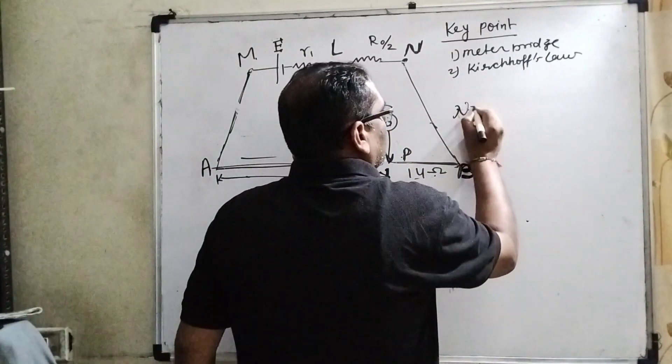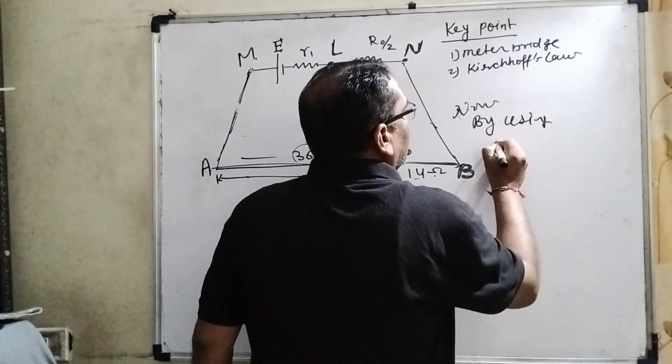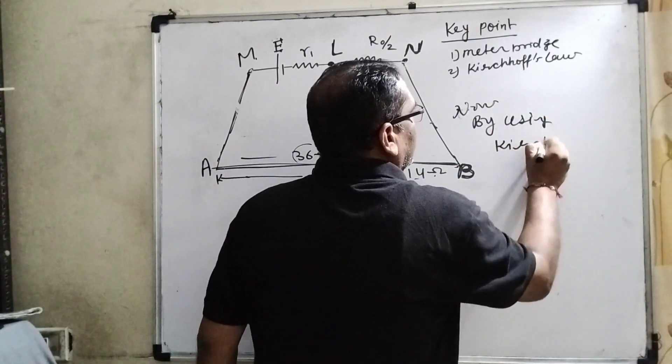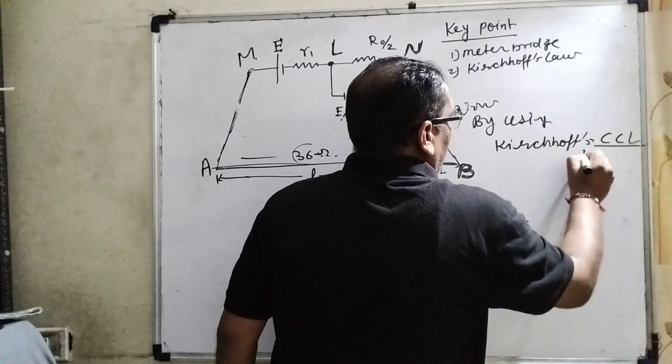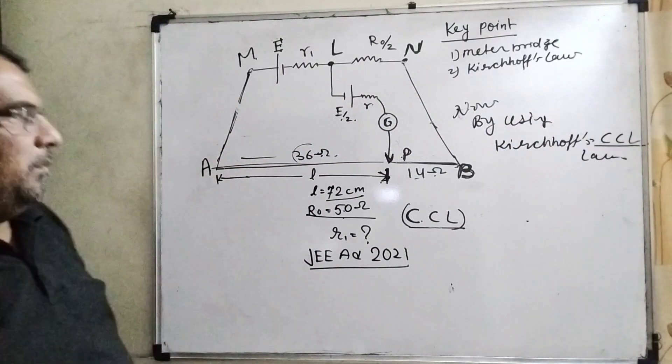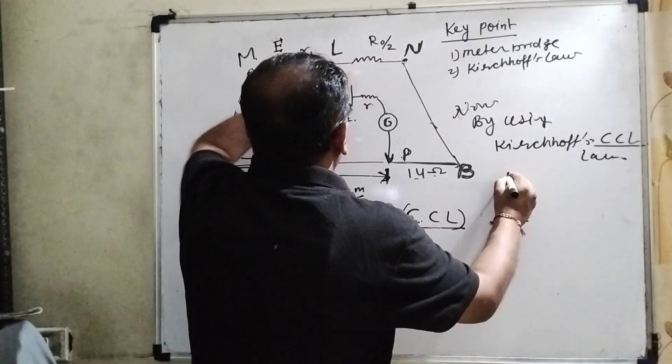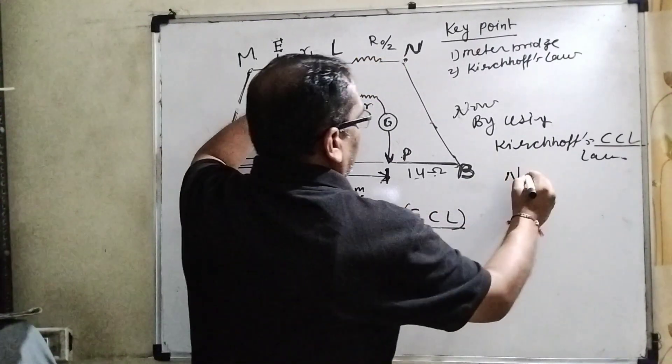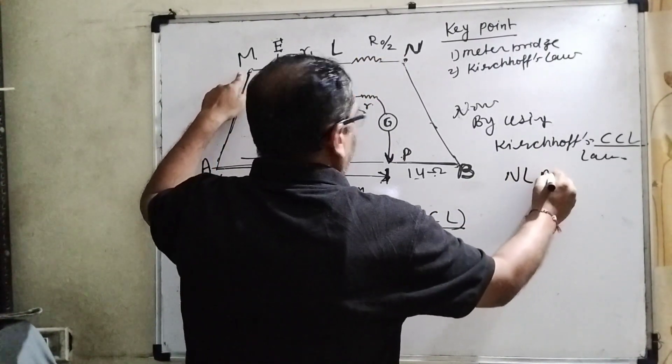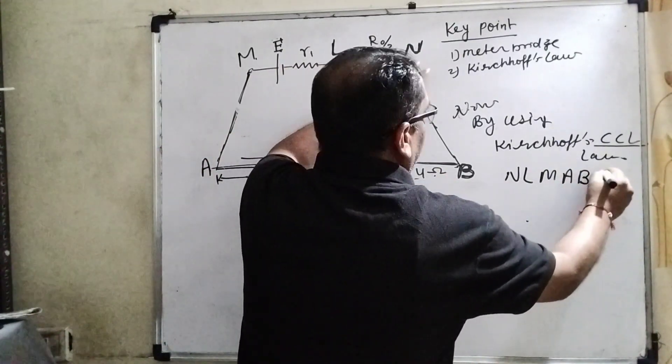By using Kirchhoff's CCL, closed circuit law, what is the path? The path we have taken is NLMMABN.